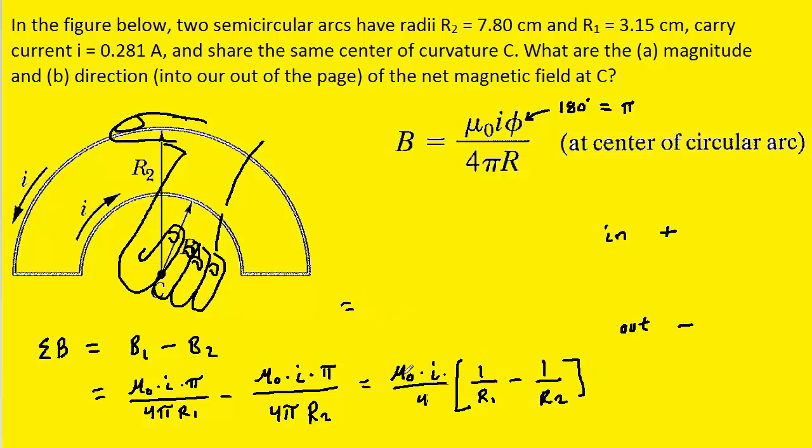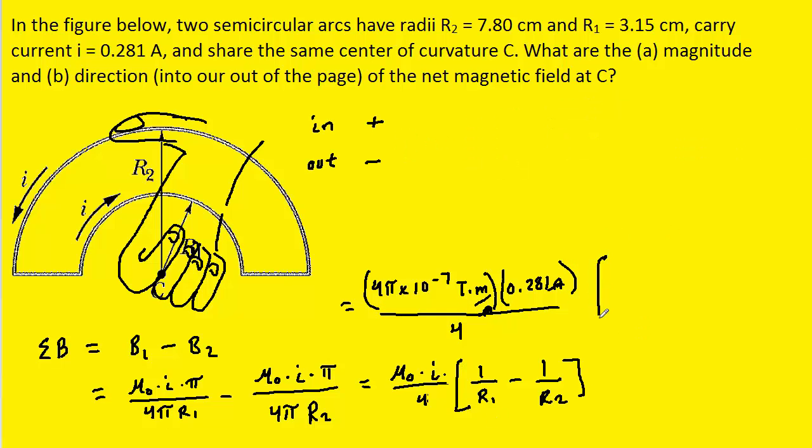Let's work our way up the page here. We'll plug in the values now. Now, we know that this constant has a value of 4 pi times 10 to the minus 7. And that's Tesla times a meter per amp. And then we're multiplying by the current, which was given to us as 0.281 amps. We can see here that the amps are going to cancel out. This is all divided by 4. And then we're multiplying by 1 over R1. Now, R1 and R2 are given in centimeters, so let's just make sure to convert to the standard unit of meters. So that would be 0.0315 meters minus 1 divided by 0.078 meters.